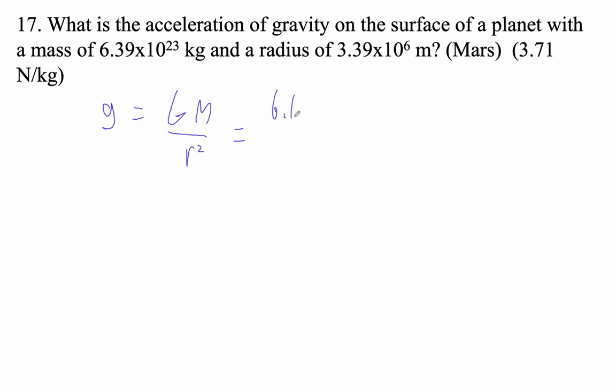Okay, so that's going to be 6.67 e minus 11. So times 10 to the minus 11th, right? Times 6.39 times 10 to the 23rd. Okay. Divided by 3.39 e6. Don't forget to square it. That's for like the money, is to square it like that.